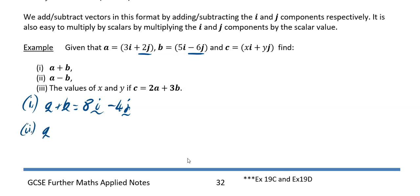For a minus b, the i parts of a are 3i and the i parts of b you're taking away, so 3i minus 5i would be minus 2i.